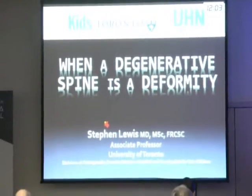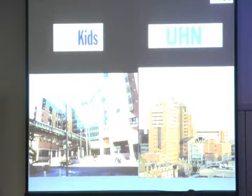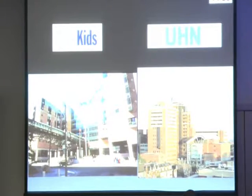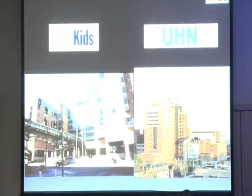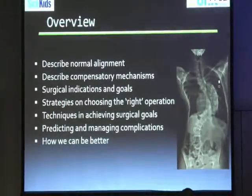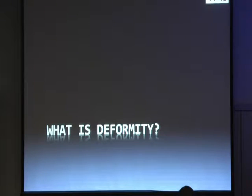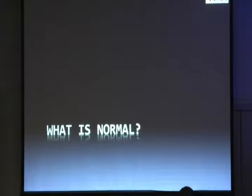I'm going to go over some of the things about degenerative spine and some of the principles that we need to see for sagittal balance, which really helps us understand some of the reasons why things fail and what we're looking for in an x-ray. We'll go over some of the alignment, the compensatory mechanisms, some of the indications, and some of the goals. At the start you want to know what a deformity actually is and what is normal.